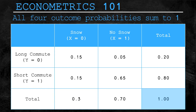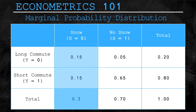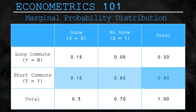Now let's briefly look at the marginal probability distribution. Suppose you want to know the probability of there being snow — X equals zero — regardless of whether you have a short or a long commute. To calculate this, you add up all probabilities for outcomes where X equals zero. That's simply 0.15 plus 0.15, which sums to 0.3, meaning the marginal probability that it will snow is 30%. Similarly, the marginal probability of a short commute — Y equals one — is 0.15 plus 0.65, totaling 0.8, or 80%.